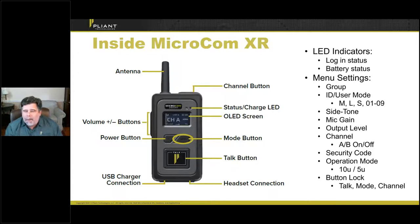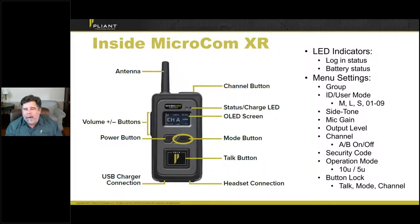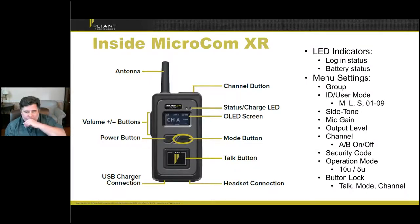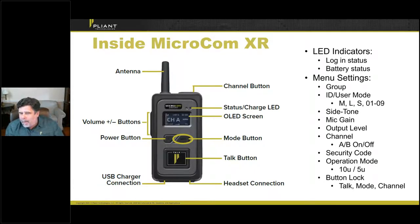The channel A/B on-off feature allows you to simplify the belt pack further by turning off the secondary channel so a person only has access to the primary channel they need. For example, if someone should only work on channel A, you can lock them there so they can't inadvertently switch to channel B. The display shows operation mode, 10U and 5U settings, button lock, talk mode, and channel.